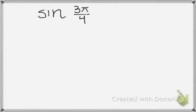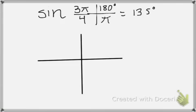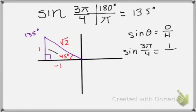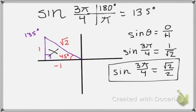Last example: the sine of 3 pi over 4. I'm going to convert that into degrees, and you get 135 degrees, which falls in quadrant 2. My reference angle is 45 degrees, so I have 1, negative 1, root 2. Sine is opposite over hypotenuse. The sine of 3 pi over 4 is opposite, which is 1, over the hypotenuse, which is root 2. Rationalize, and you get root 2 over 2. Just remember: use your reference angle and your special right triangle ratios — just be careful with those negatives.